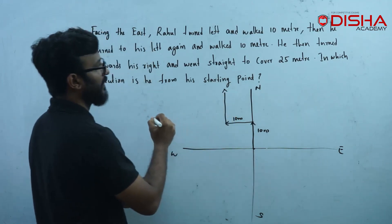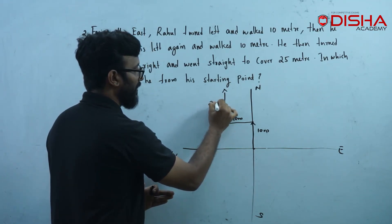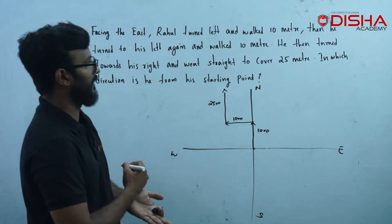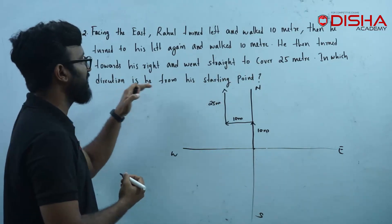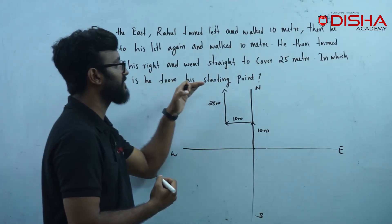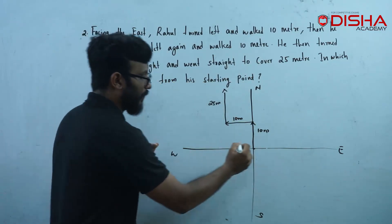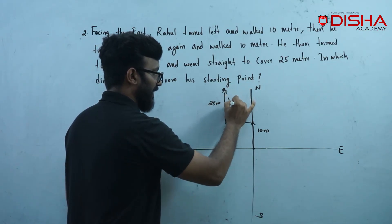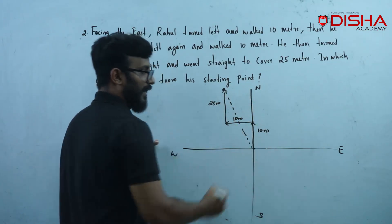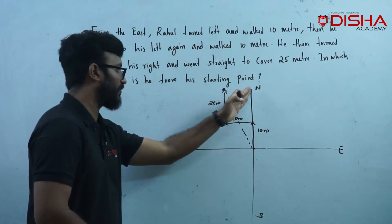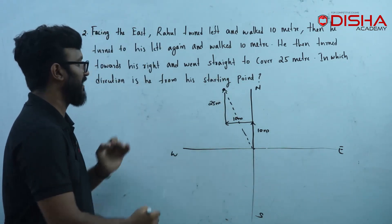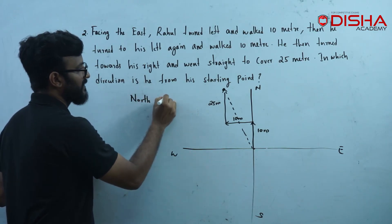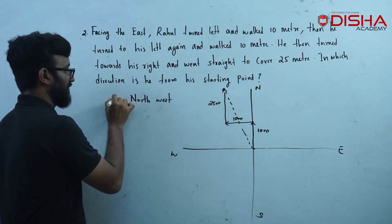How long did he travel? 25 meters. From his starting point to the end, the direction is the answer. If we are in the direction of North and West, the North to West direction is the answer.